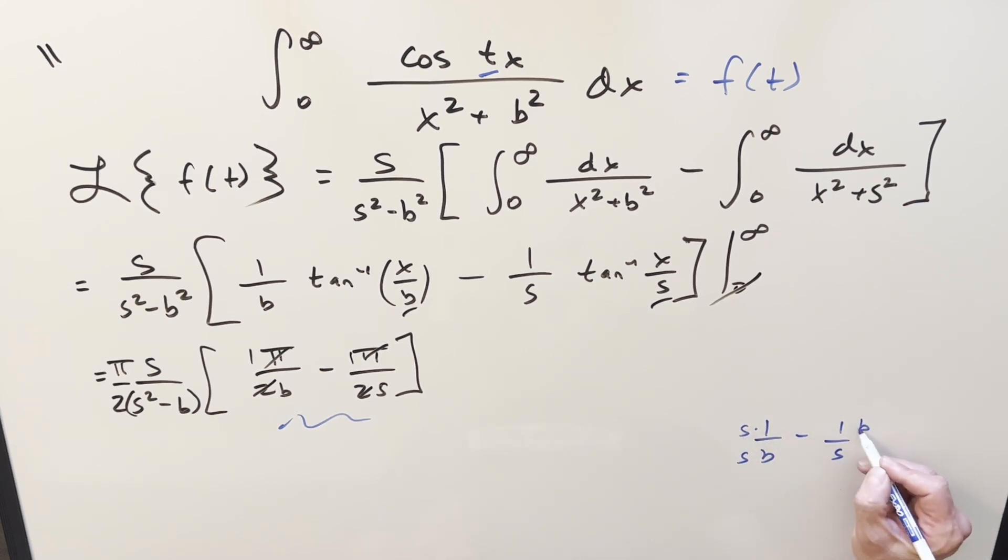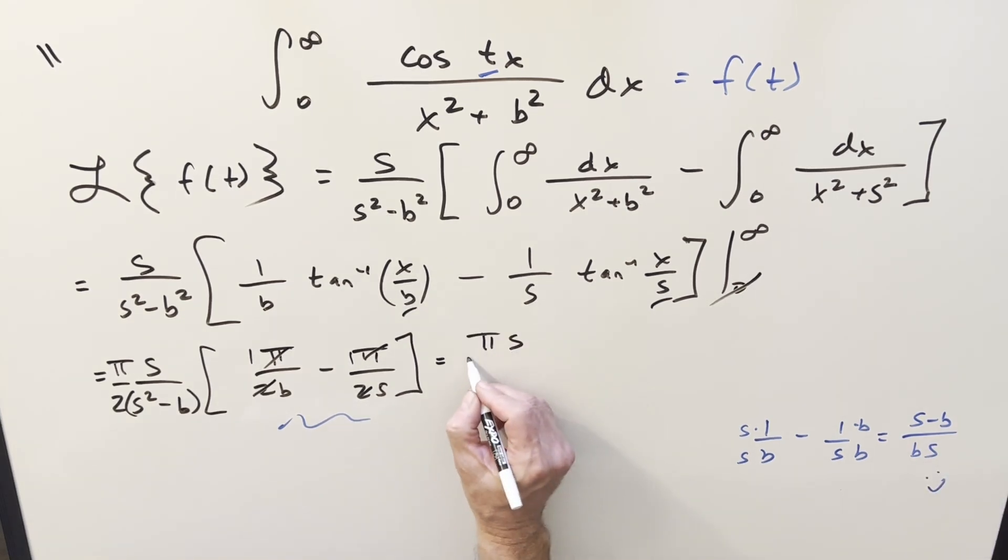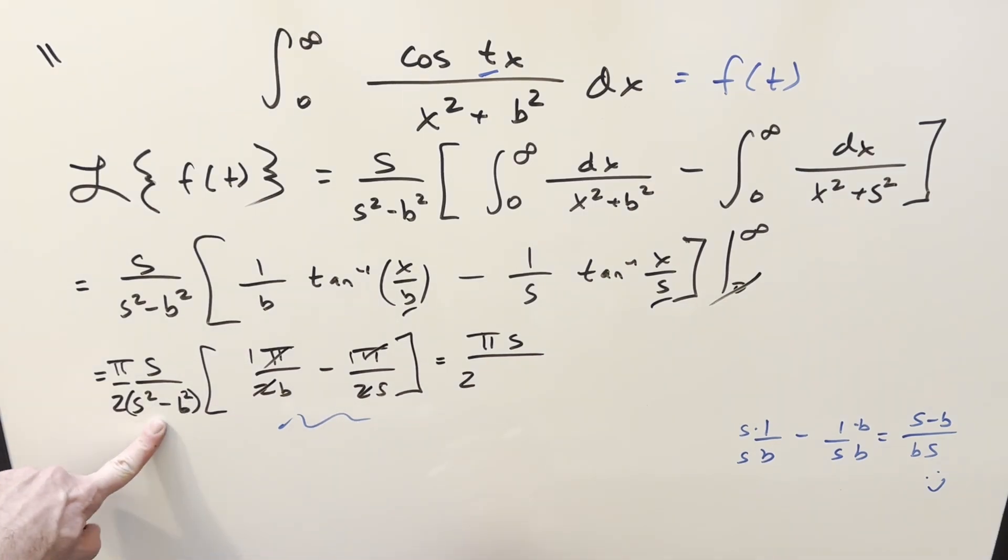This thing here becomes, this is just going to be 1 over b minus 1 over s. Let's get a common denominator on it. Just getting it where bs is going to be the denominator. So this is going to end up being s minus b over bs. So let's see if we can clean this up a little bit. We got pi times s, 2. S squared minus, sorry, that should be a b squared right there.